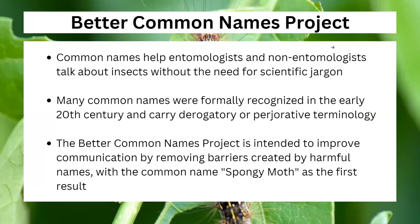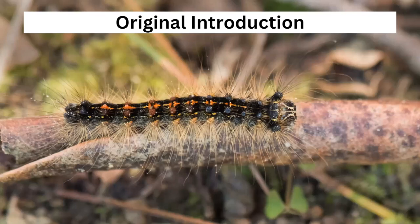You probably know this insect by a different name, and I'm only going to use it once: the Gypsy Moth. That term, unfortunately, has a history to it, and as a part of the Better Common Names Project, entomologists in our country have been working on changing certain common names of insects that contain derogatory or pejorative terminology. We want to break down barriers to help educate more and more people, and using terms like that just doesn't work. So from now on, this insect will be referred to as the Spongy Moth, and there is a reason for that particular name that I'm going to go over in a little bit.